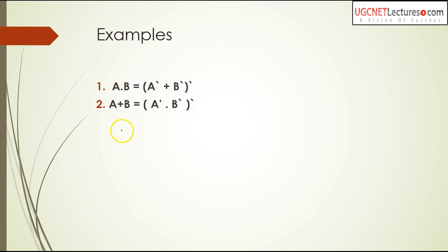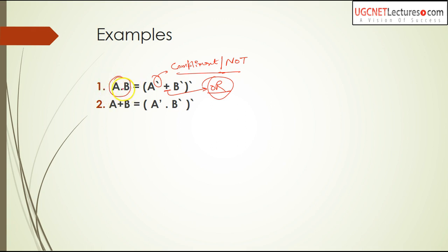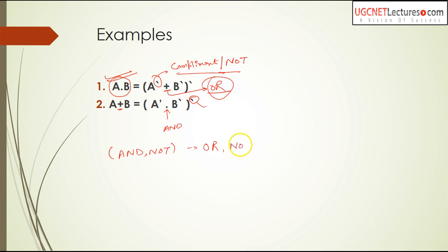Let's see an example. From the complement (NOT) and OR operations, you can derive AND. Specifically: A AND B = (A' OR B')'. So from complement and OR, you can derive AND. And from AND and NOT you can derive OR. The combination AND and NOT is functionally complete — from AND and NOT you can derive anything: OR, NOR, NAND, all operations. That's why they are functionally complete. Similarly, OR and NOT is functionally complete.